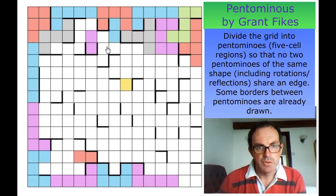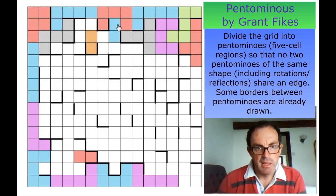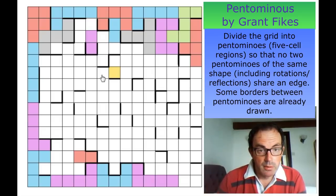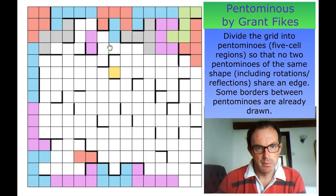Look at this blue region and this purple region — if I connect these together into a Z pentomino, this white region here will also have to be a Z pentomino. So it's good that these are different colors; these are not the same pentomino.